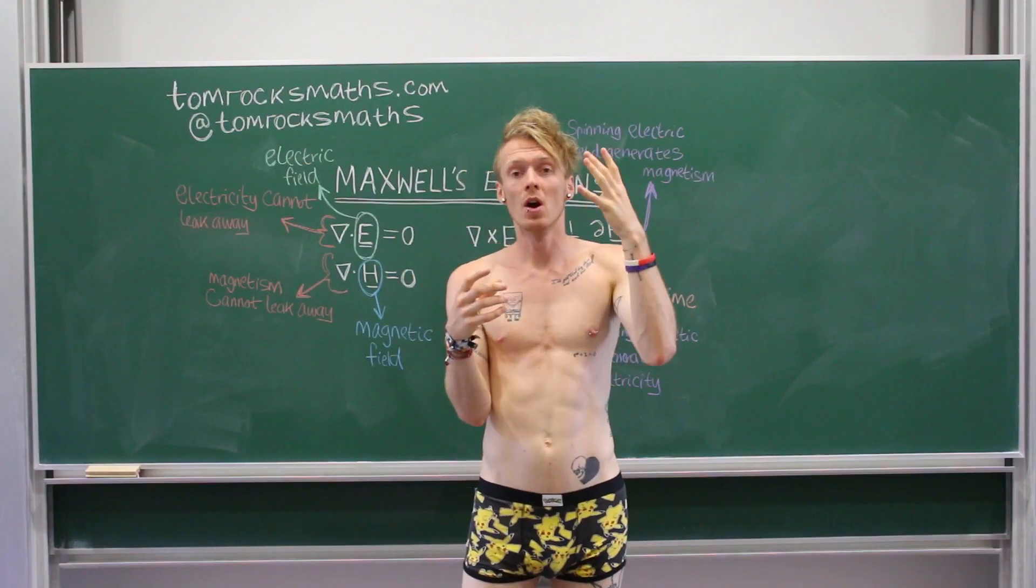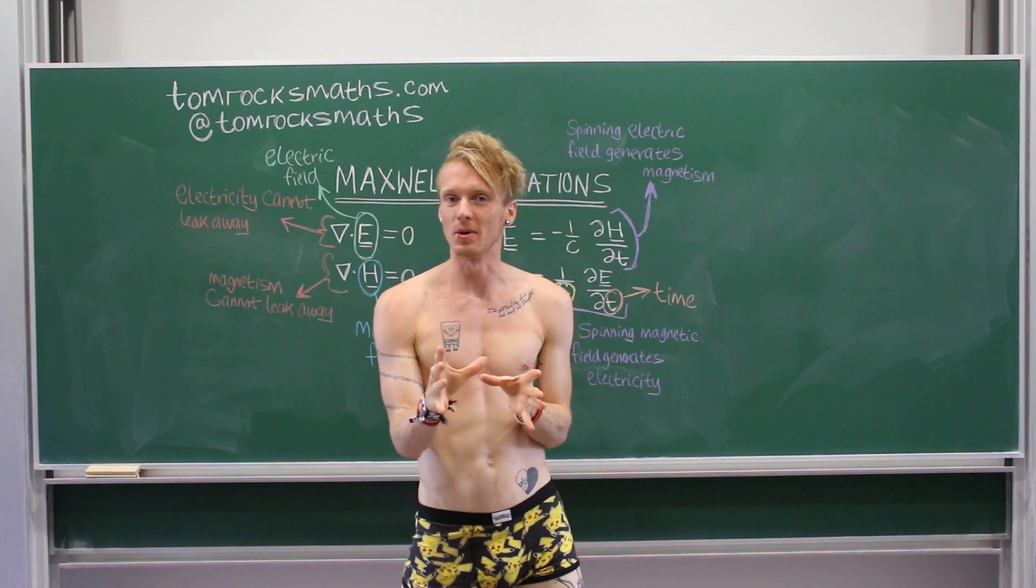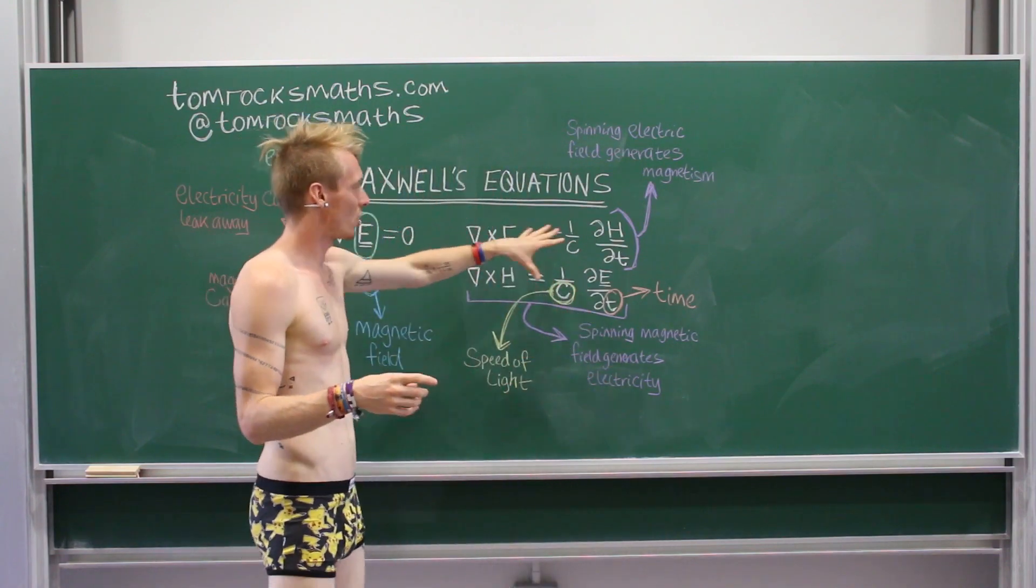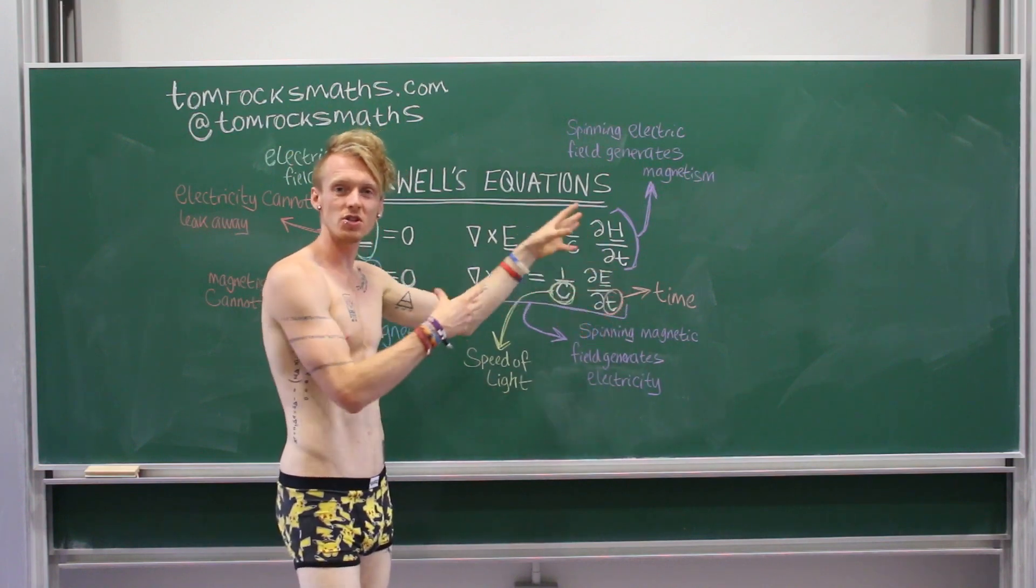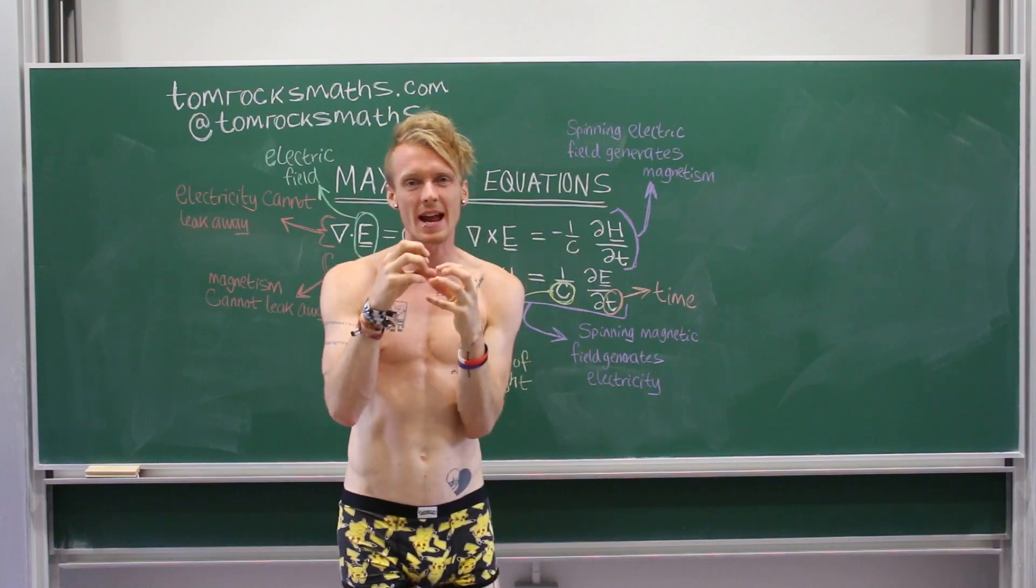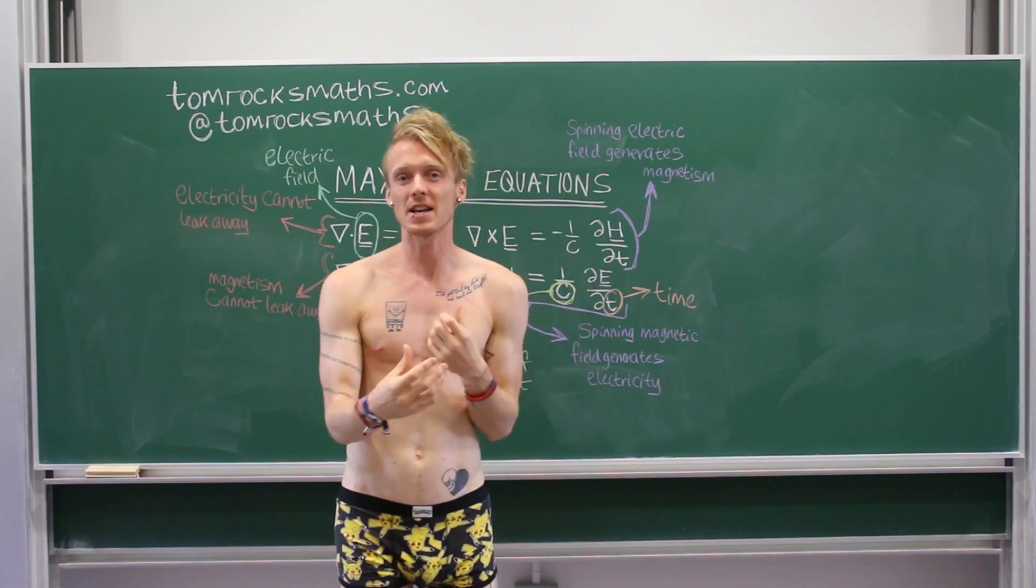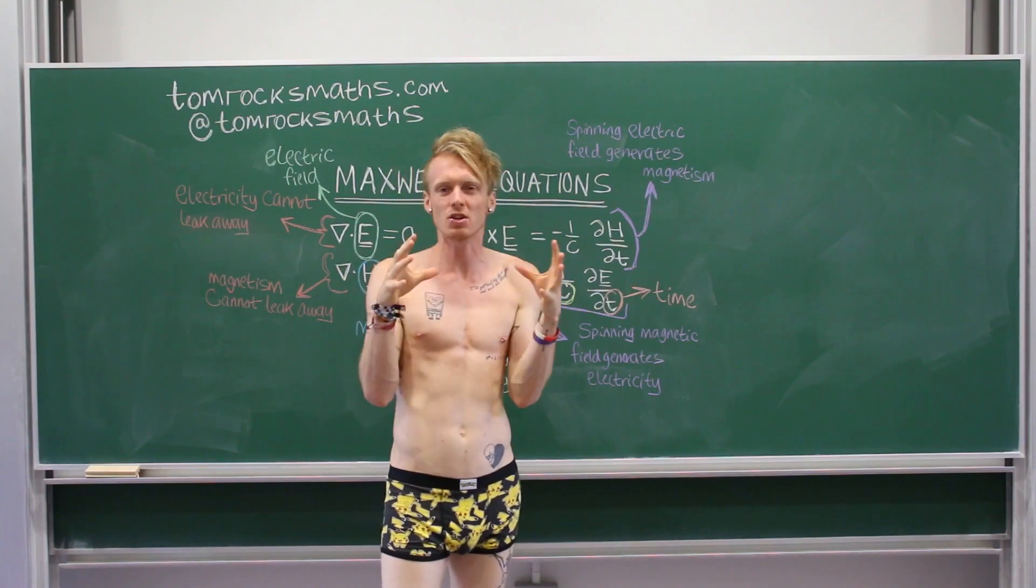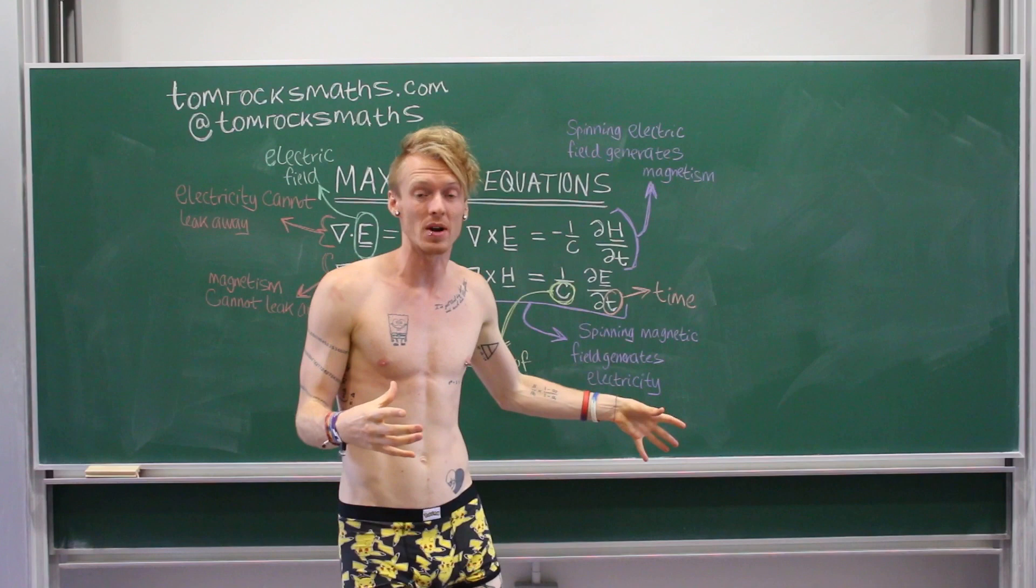The trick is to write these equations in terms of just one variable. So, you'll see here, this one is in terms of E and H, and this one's in terms of H and E. So, if you can somehow combine them, and have an equation just for E, your electric field, and just for H, your magnetic field, you're going to get more understanding. And that's what we do a lot in maths. We try to rearrange equations in terms of just one variable. And I'm going to show you how to do it with these equations.